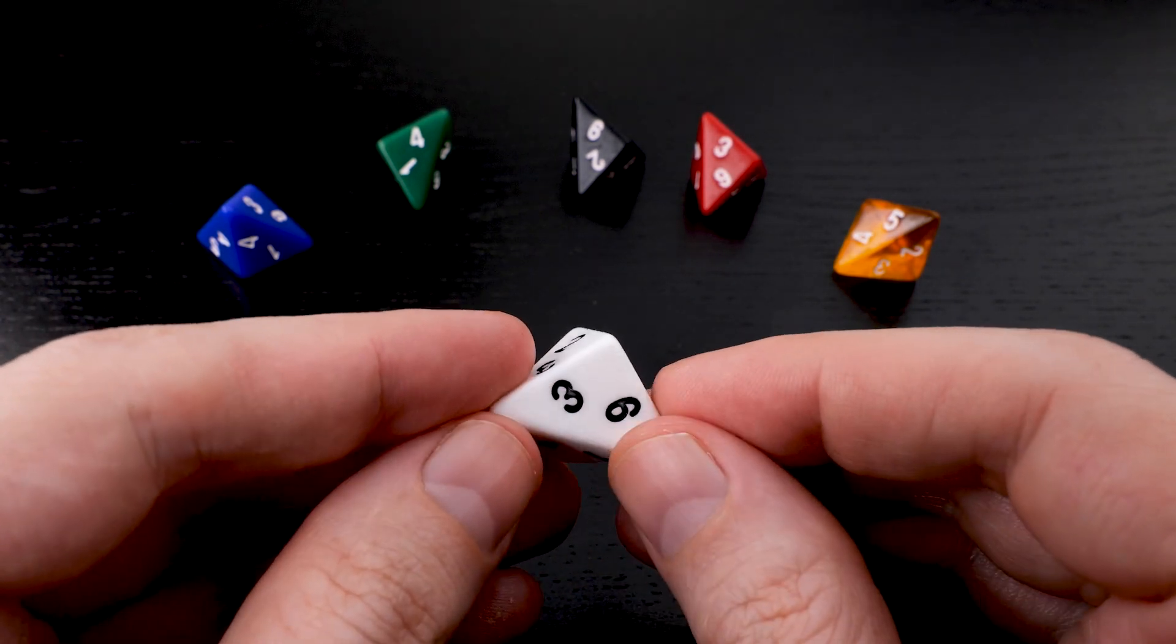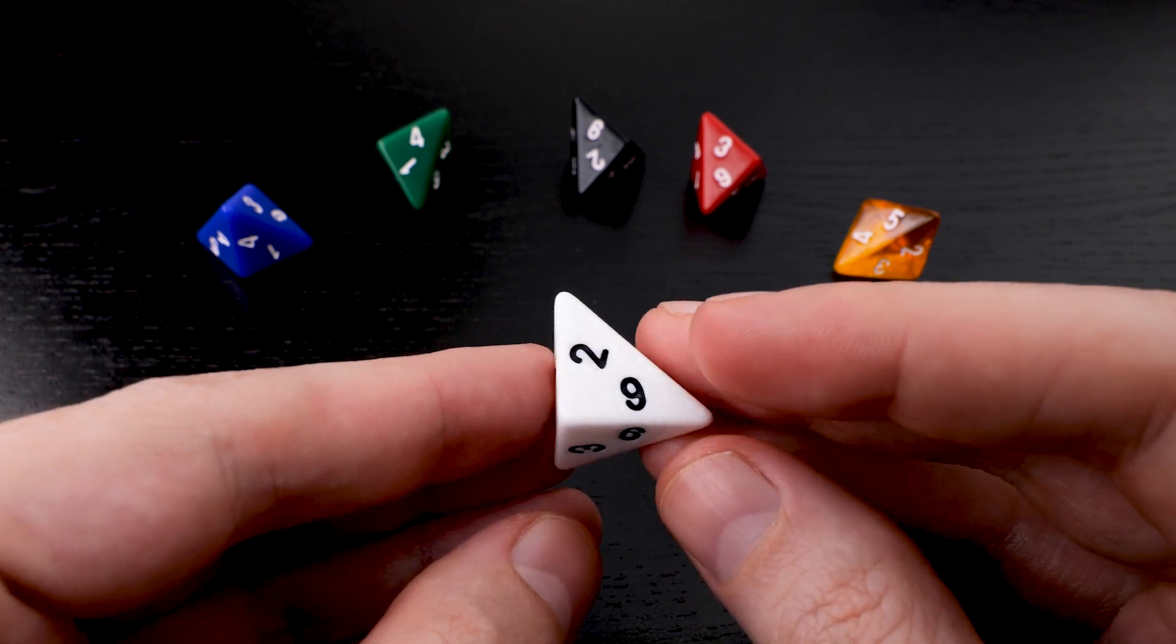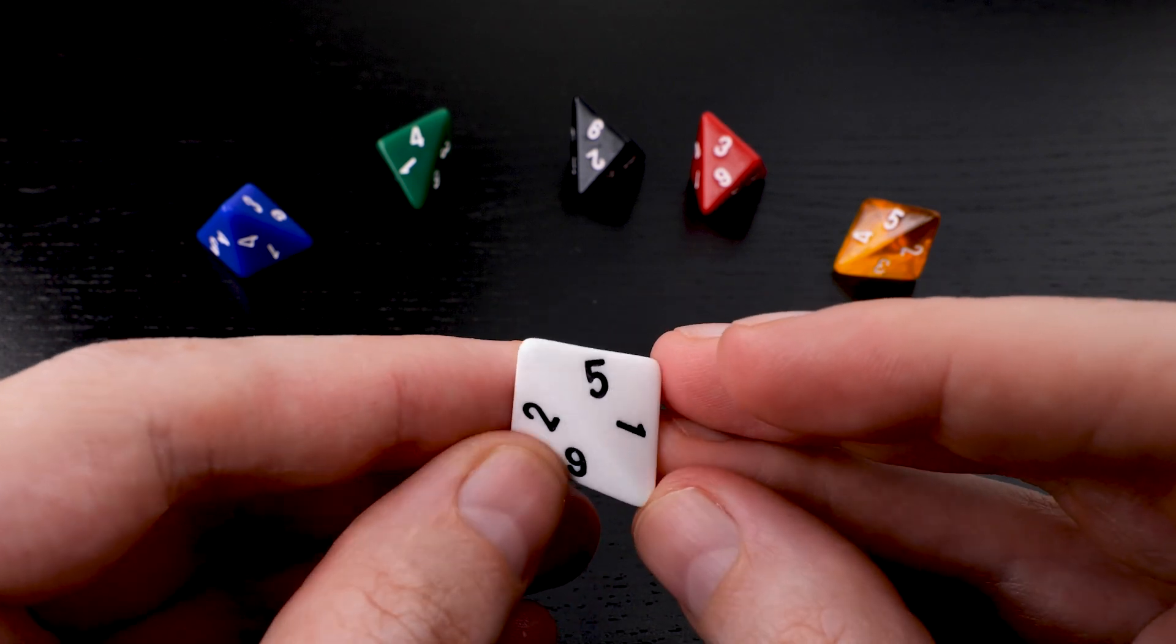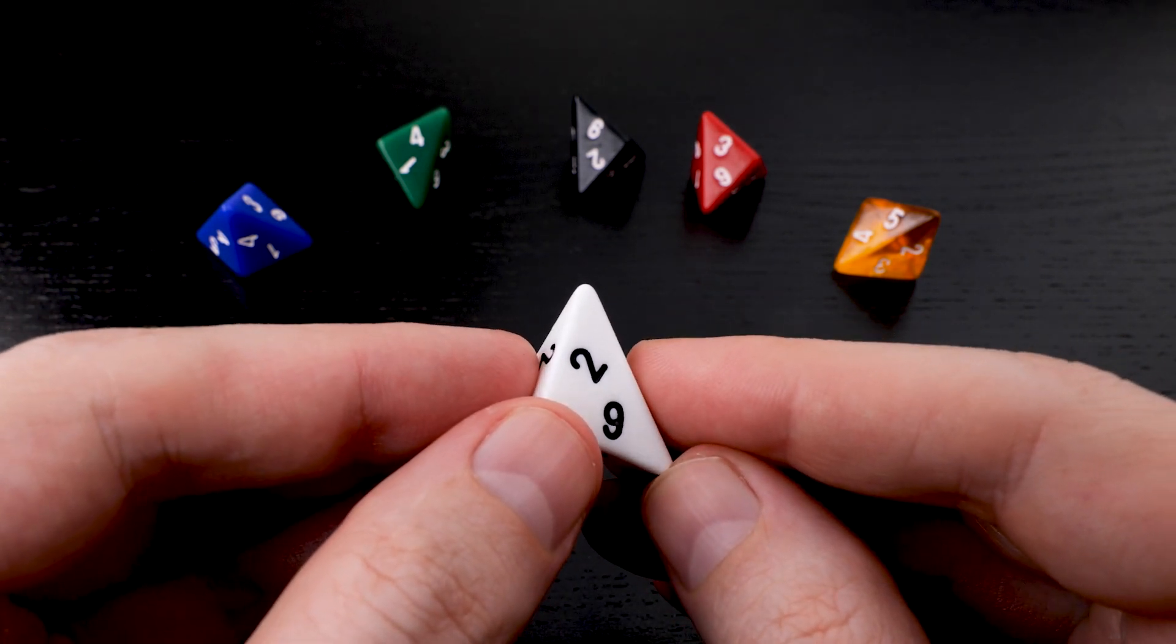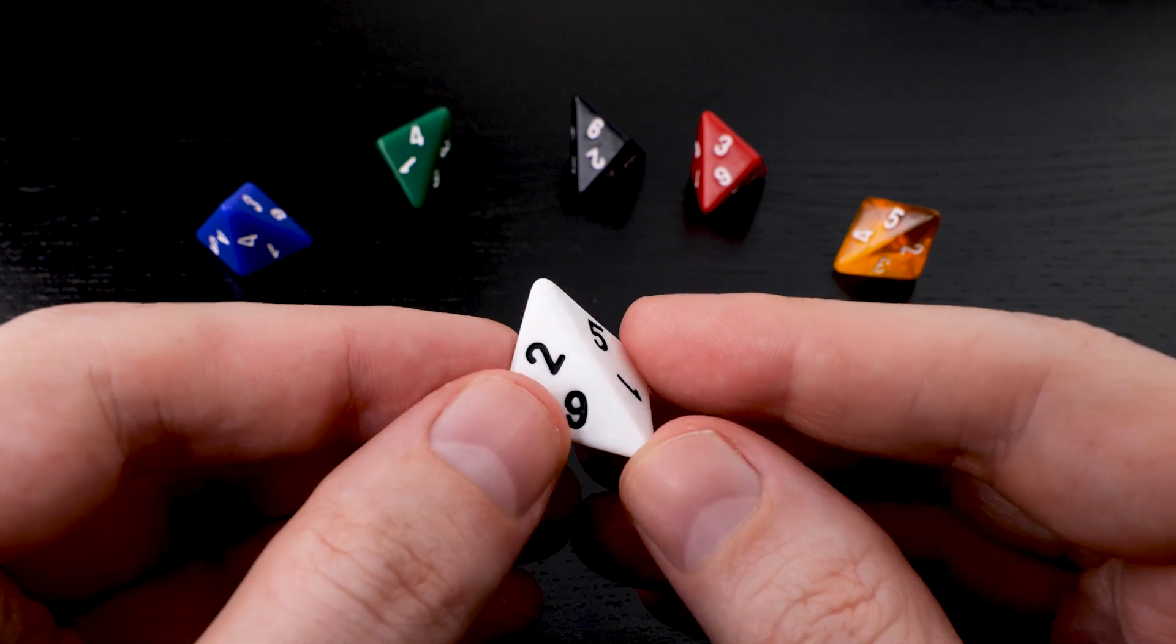Perhaps one reason nobody makes D6s like this is there's no face opposite the one that's down on the table. Instead there's an edge. But that doesn't stop everyone else from making D4s that don't have faces opposite faces, so we just went for it anyway.